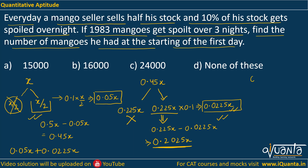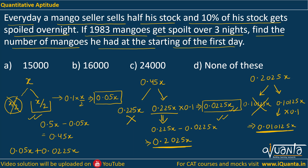He will start Day 3 with 0.2025X. Half of it, that is 0.10125X, will be sold. We only need to take care of the 50% remaining and 10% of that will be spoiled. So 50% of 0.2025X is 0.10125X, and 10% of this is 0.010125X. This is the number of mangoes spoiled on the third night.